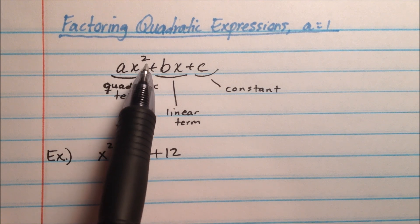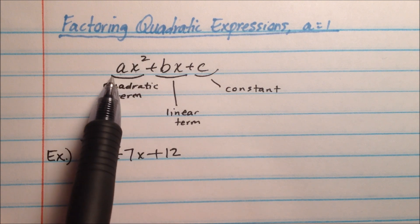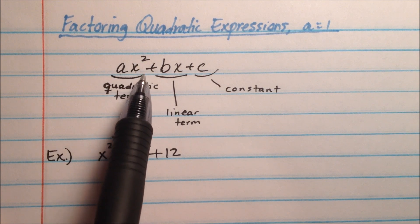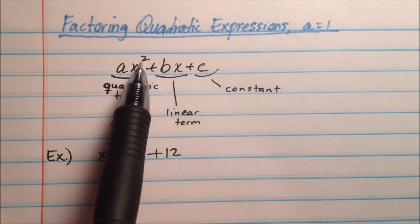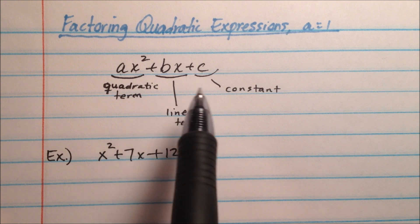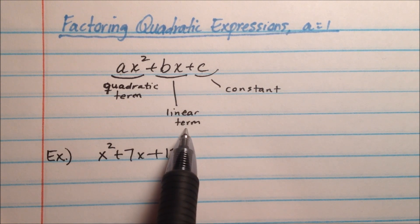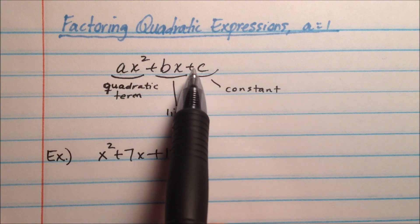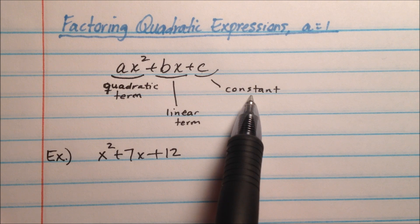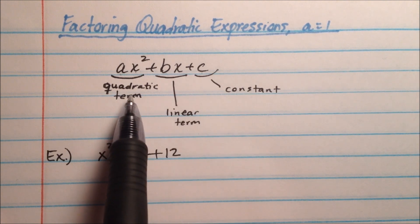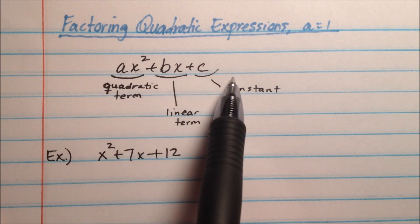Quadratic means that its degree, or highest exponent, is 2. So this ax squared is going to be called the quadratic term, since that's the term that causes it to be considered quadratic. The middle term here, the one with just the x, is called the linear term, and the term that does not have any variable with it, just a number, we call that the constant. So we've got three terms here: quadratic term, linear term, and constant.